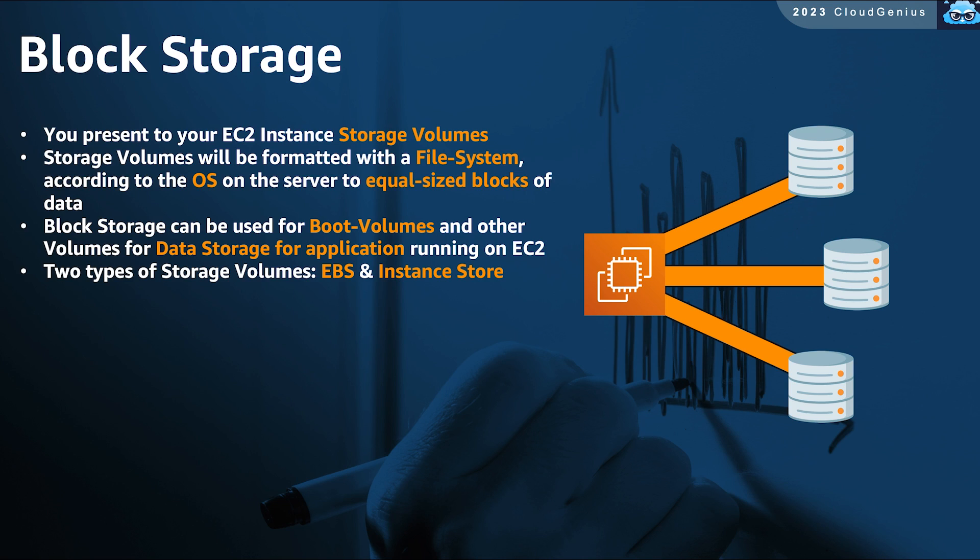In AWS, there are two types of block storage volumes: instance store volumes and EBS volumes.